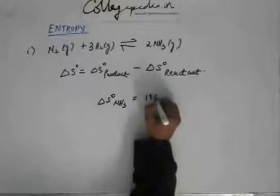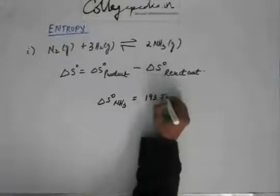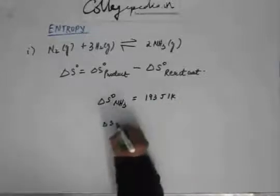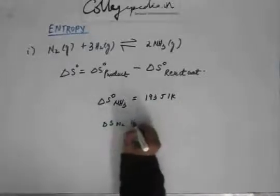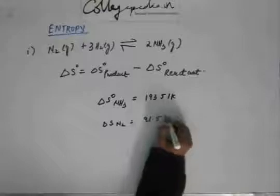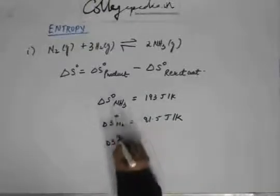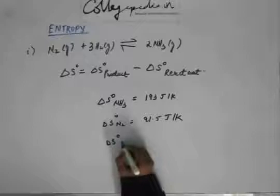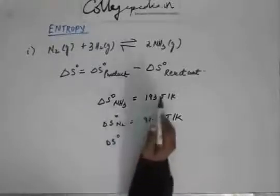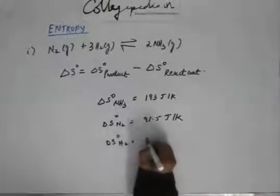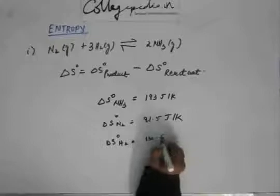Delta S of ammonia is 193 joule per Kelvin, similarly delta S of nitrogen gas is 91.5 joule per Kelvin. And delta S of hydrogen gas suppose is equal to 130.6.